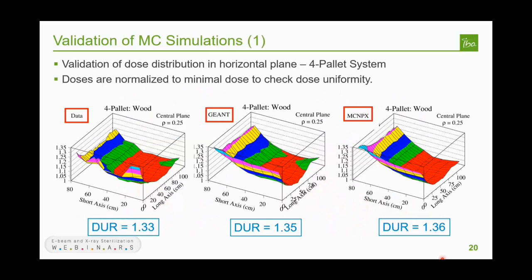Here are a couple of validation examples. A study of dose distribution inside the horizontal plane of a palette using CTA shows doses normalized to the minimal dose to check dose uniformity. The measured DUR is 1.33. Monte Carlo simulations using GEANT3 give a DUR of 1.35 and MCNPX gives 1.36 — very close to the measured data. The shape of the distribution is also in very good agreement between Monte Carlo and real data.